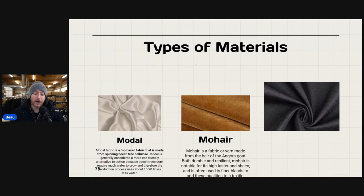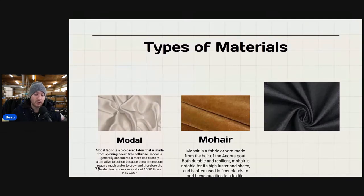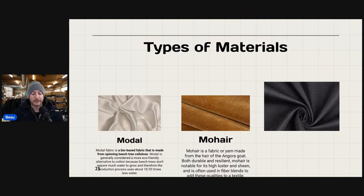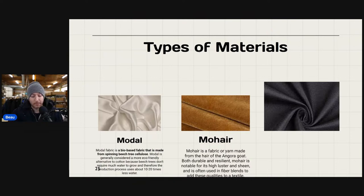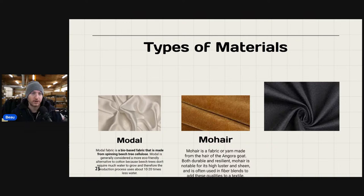Mohair is a fabric or yarn made from the hair of the Angora goat. Both durable and resilient, mohair is notable for its high luster and sheen, and is often used in fiber blends to add these qualities to a textile. I've yet to find this one, but if it comes from anything goat, you're probably going to command a higher price. You won't see Walmart brands made of these materials because they're too expensive.